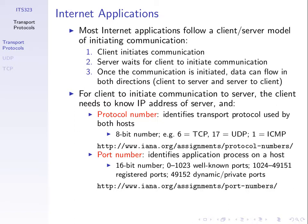Both endpoints will use the same transport protocol to exchange data. If we choose TCP, the protocol number is 6. And then we have a port number, which identifies the application on the other computer we want to contact — for example, port number 80 identifies the web server application. So we have three addresses: the IP address identifying the device, the protocol number identifying the transport protocol, and the port number identifying the application on that computer.